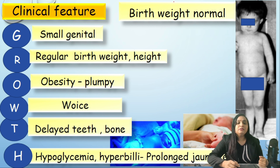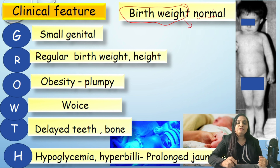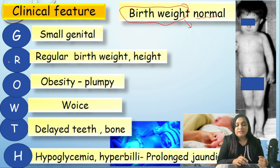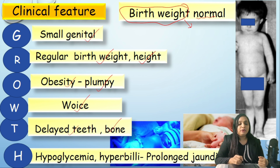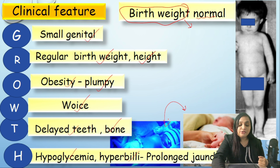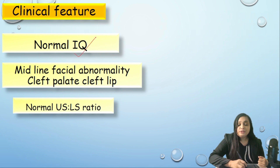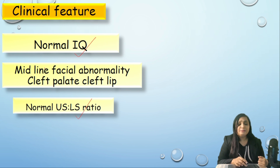Clinical features of growth hormone deficiency: birth weight and parameters at birth are normal. The mnemonic GROWTH helps remember features — G: small genitals; R: regular birth weight and height; O: obesity (plump child, high-pitched voice); W: delayed teeth and delayed bone age; T: delayed teeth; H: hypoglycemia and hyperbilirubinemia in the newborn period (repeated hypoglycemia, prolonged jaundice). The child has normal IQ and normal US:LS ratio.